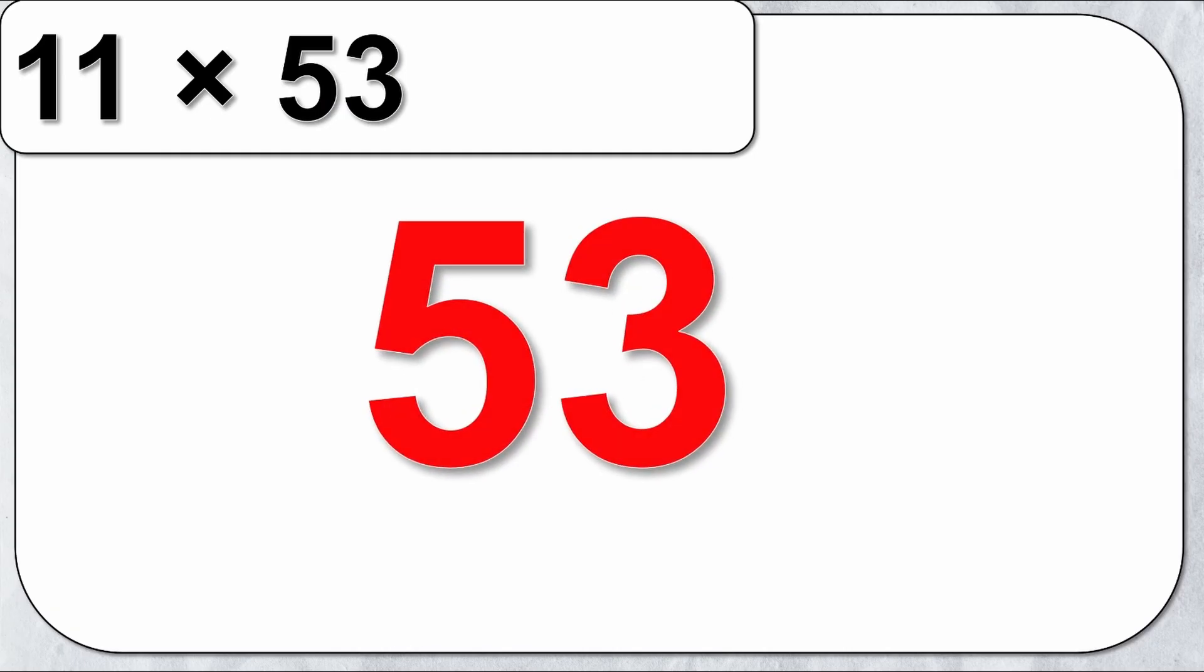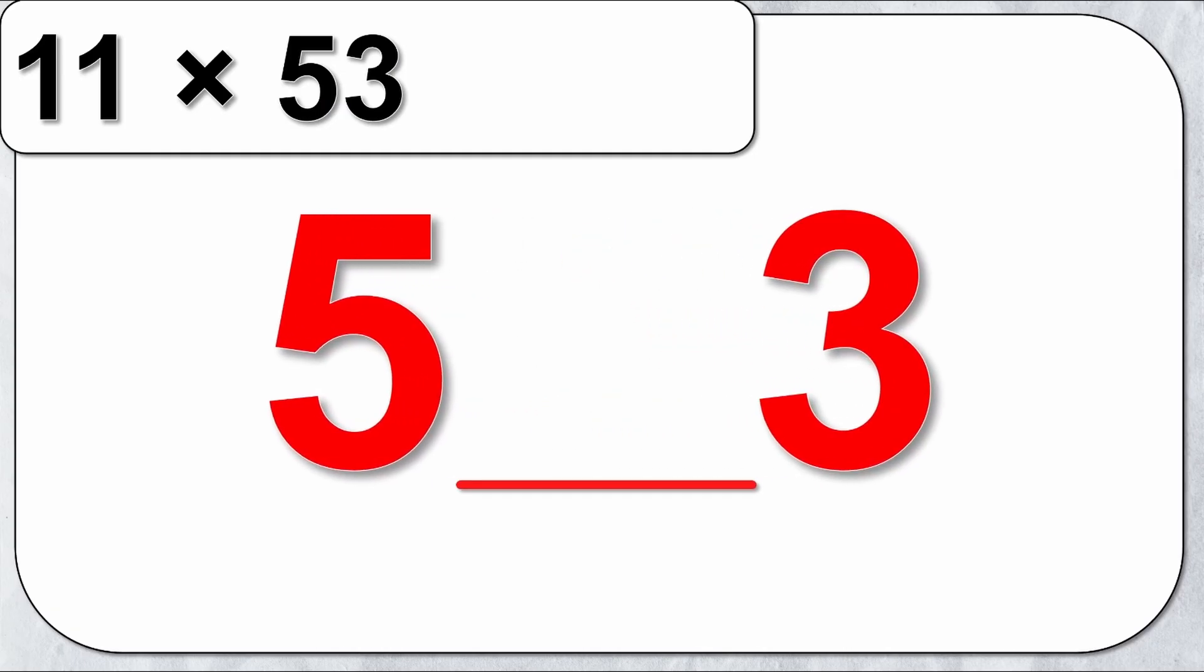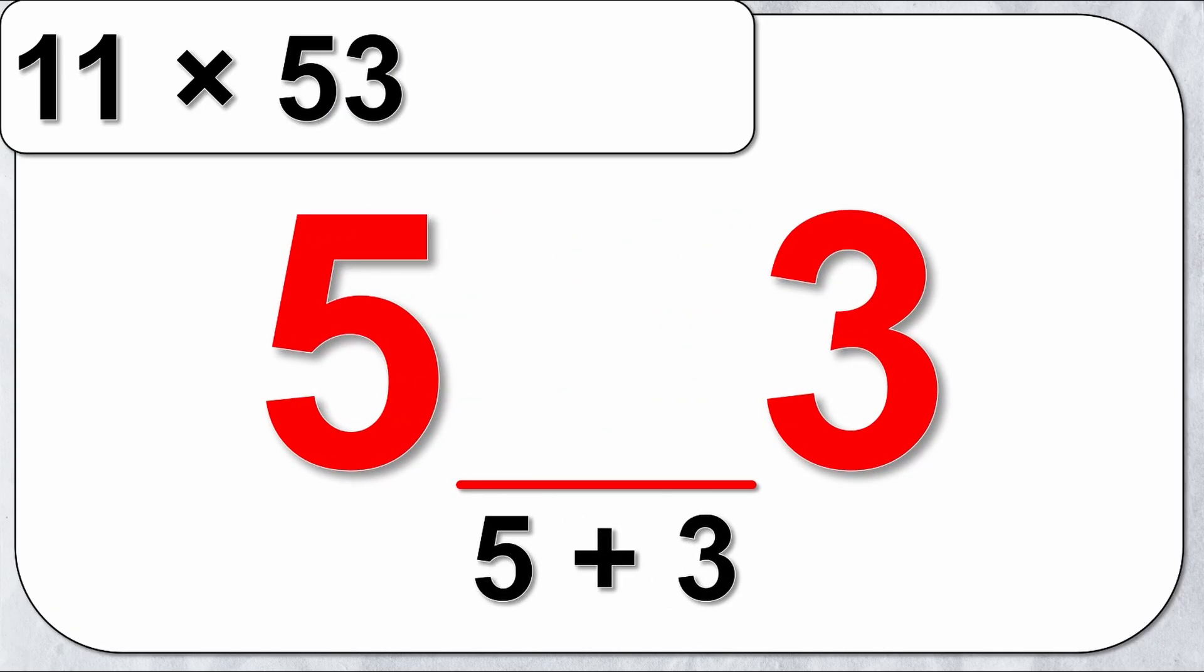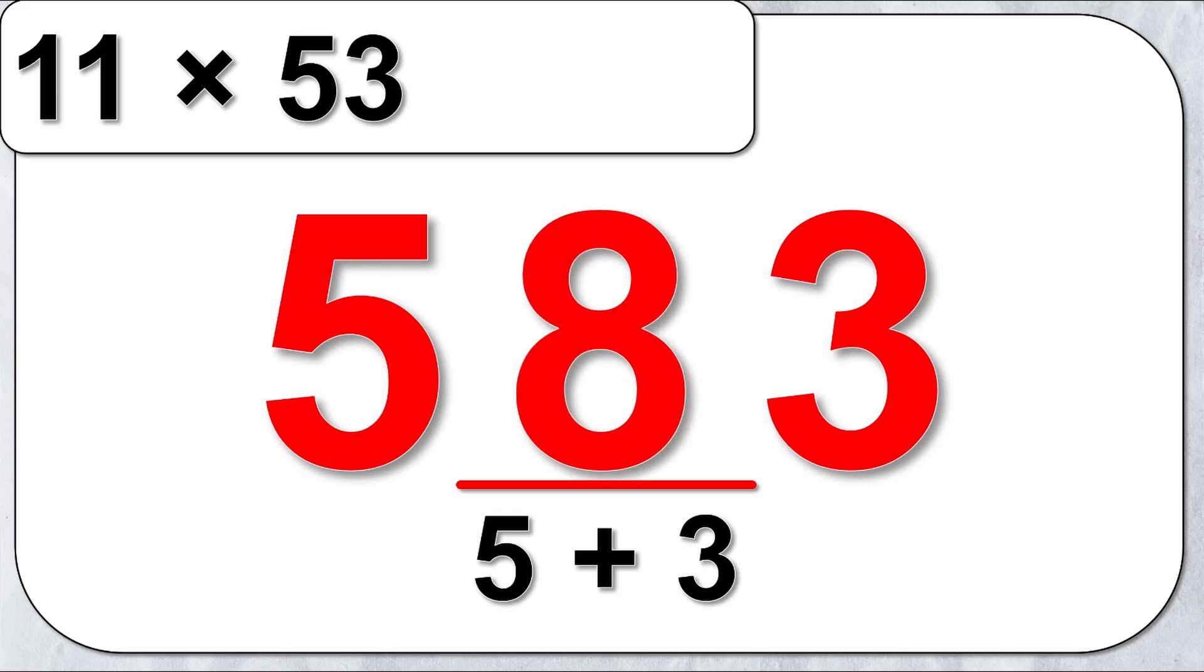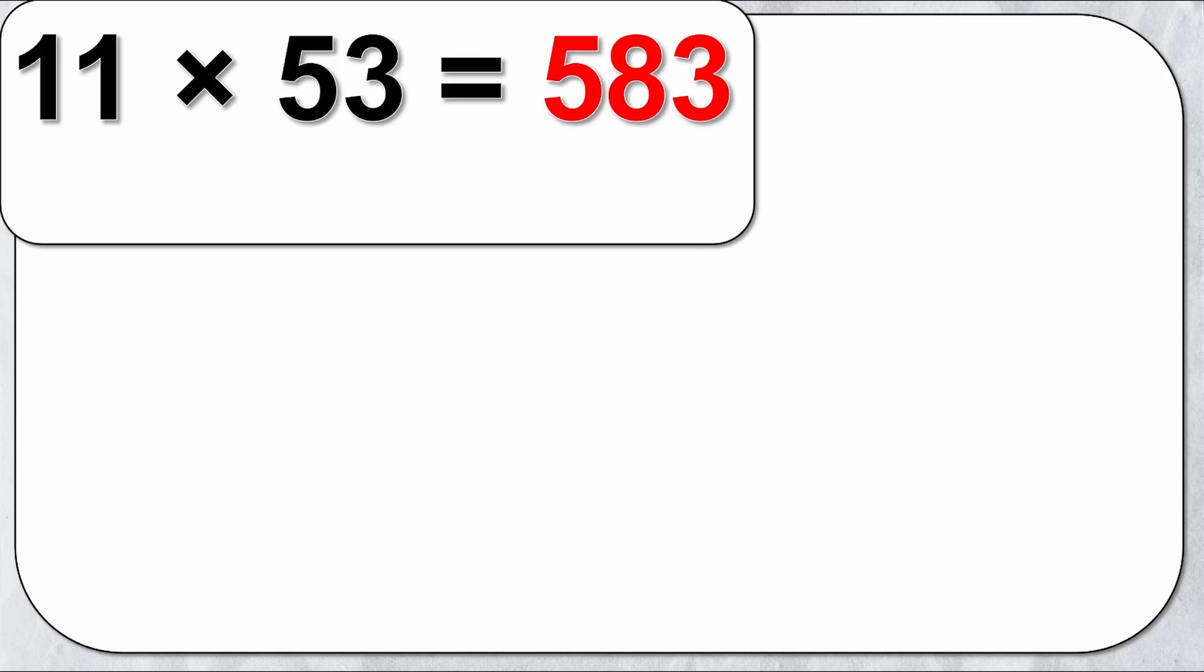I'm going to write 53 and pull them apart so that the middle number is just the sum of the first and last number. So the middle number will be 5 plus 3 which is 8, and 11 times 53 is 583. Simple as that.